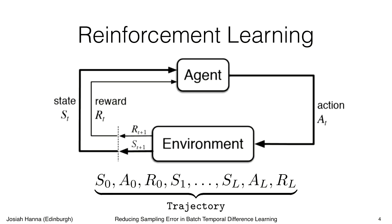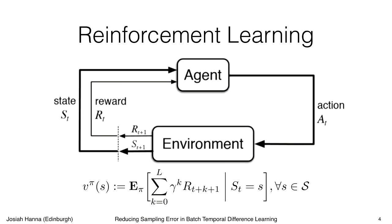One of the central quantities of interest in reinforcement learning is called the value function. For any state and any policy the agent could be following, we want to know the expected amount of reward from that state following a certain policy. Formally, we're in a state, sample an action, the environment samples a new state, and we look at the sum of future rewards. It's an expectation because there's randomness in policy action selection and in the environment. We just want to know on average how good it is to follow this policy from a certain state.